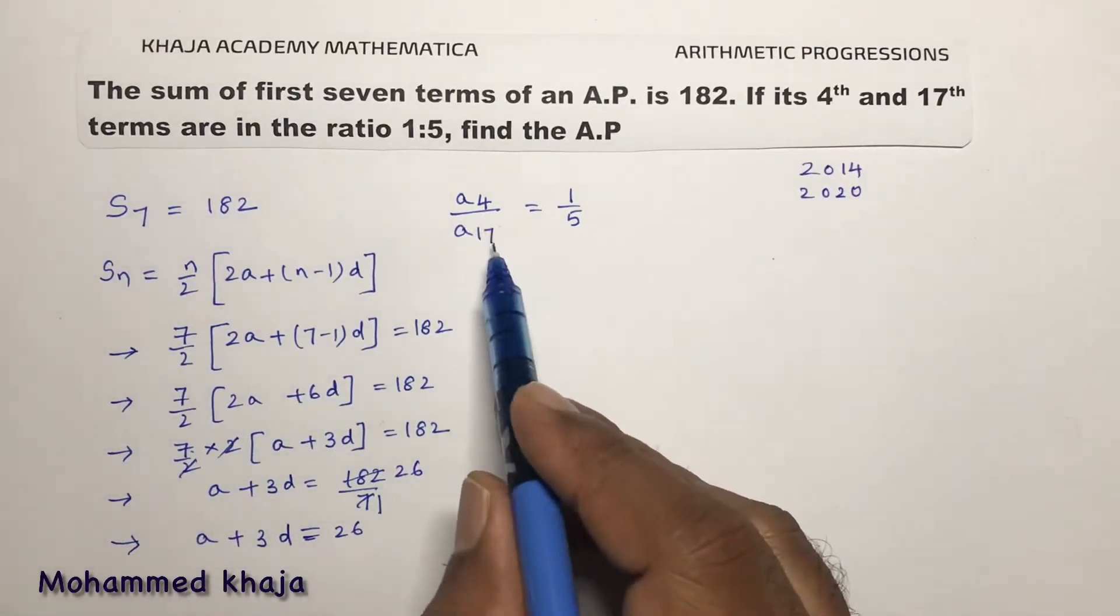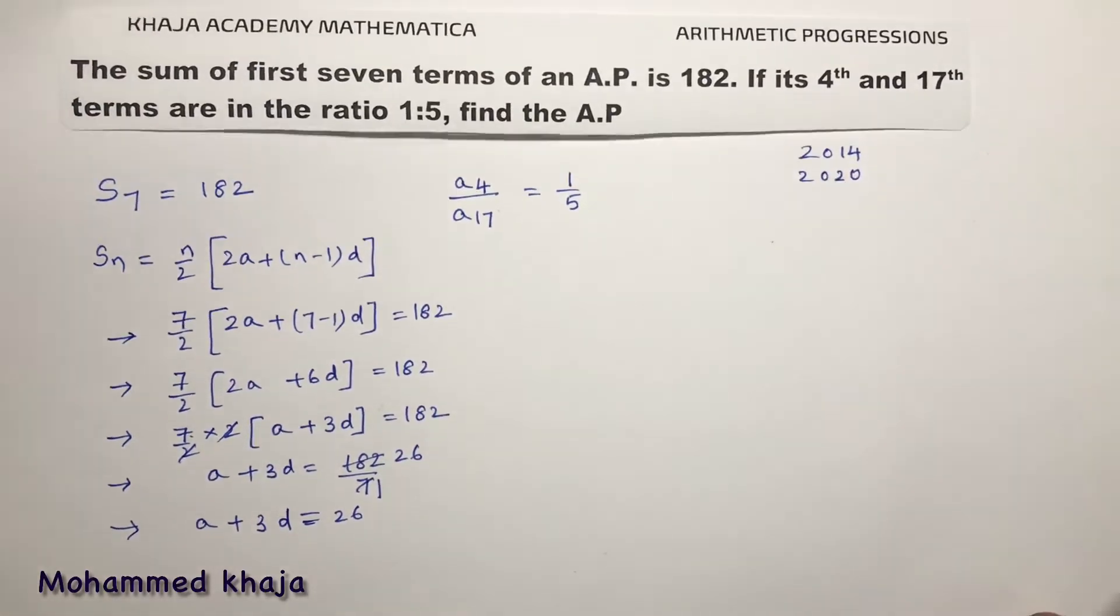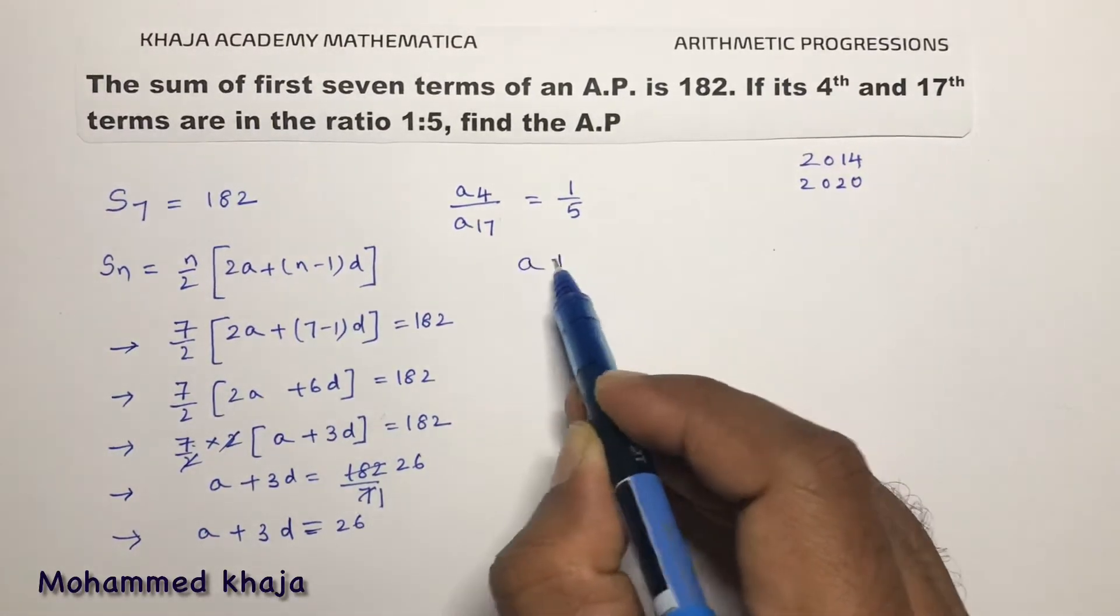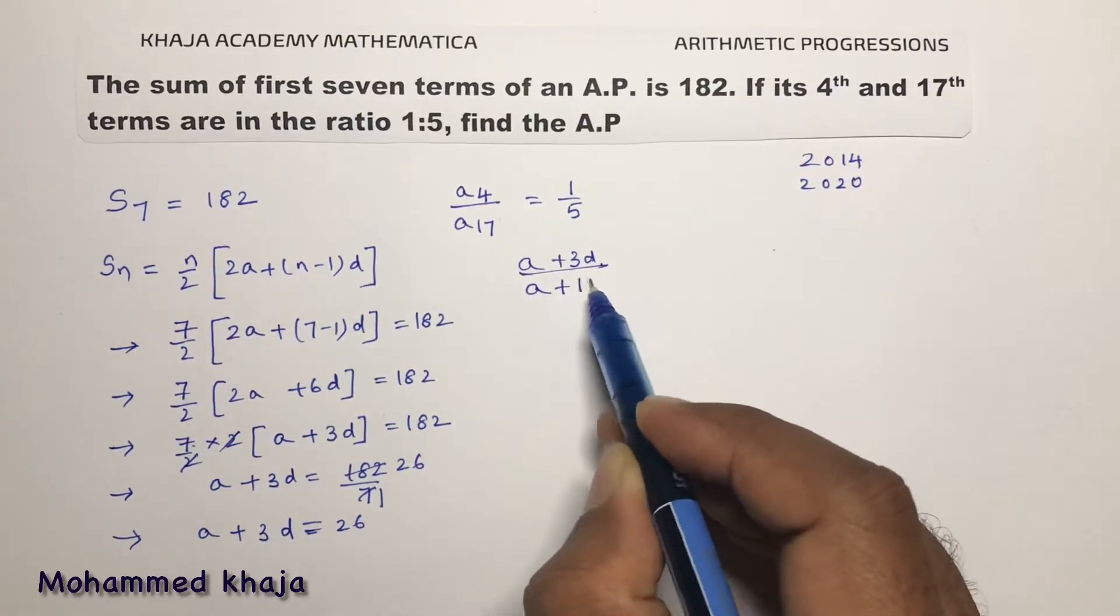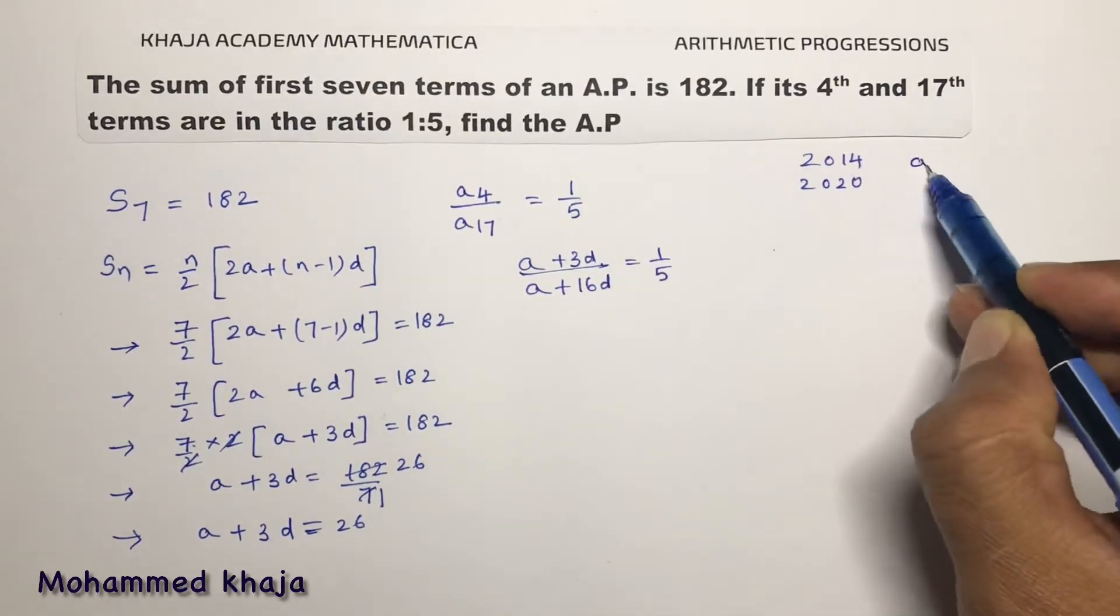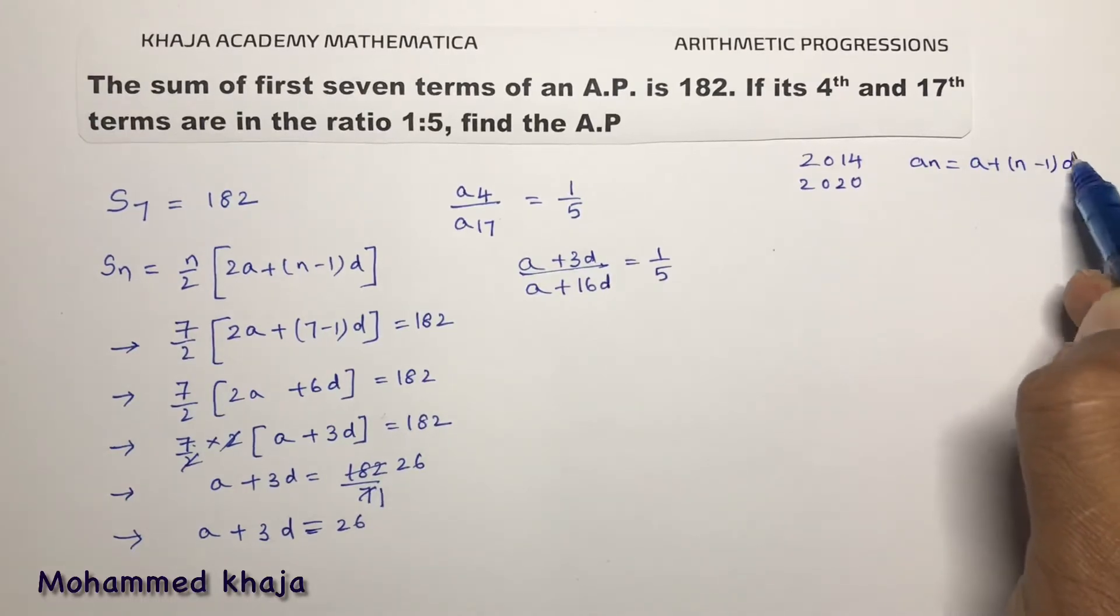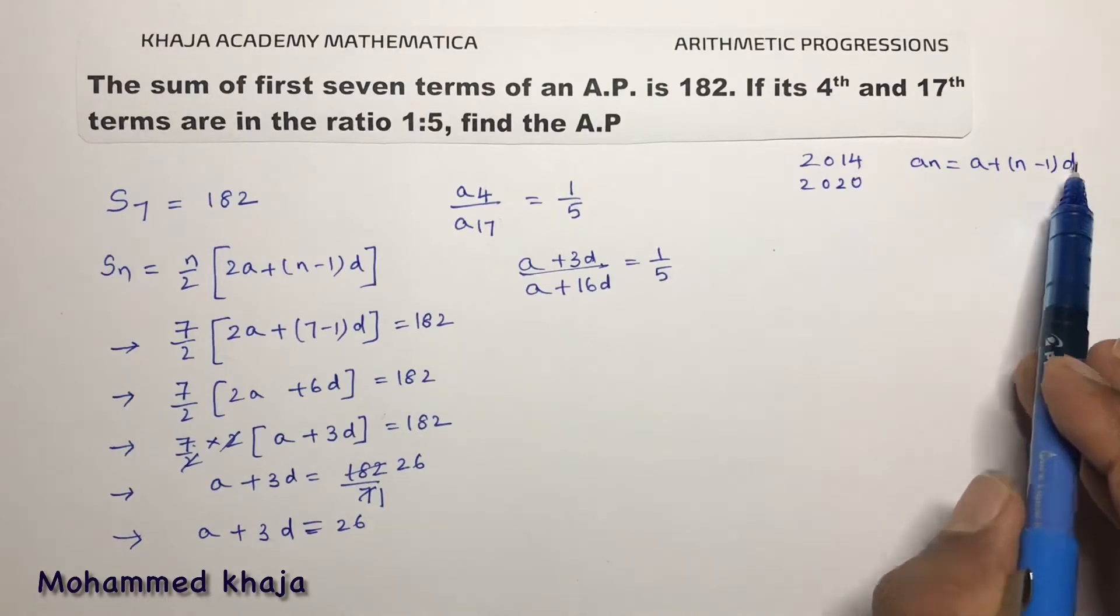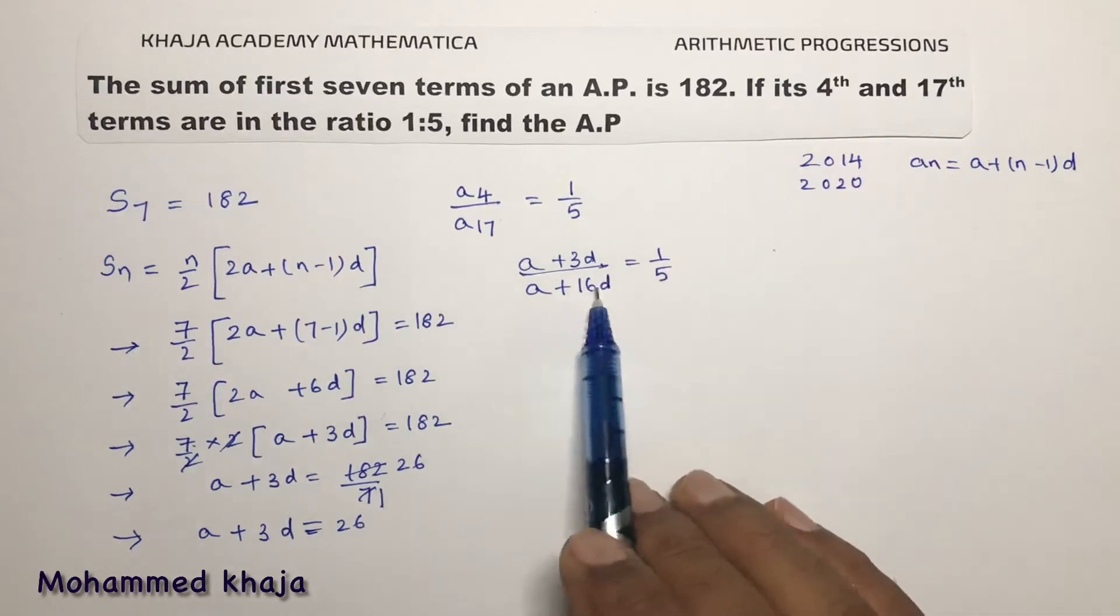Fourth term and 17th term are in the ratio 1 is to 5. So A4 is A plus 3D, A17 is A plus 16D. Nth term of an AP, I am using the formula A plus N minus 1 into D. So A4 will be A plus 4 minus 1 into D which is 3D. A17 is A plus 17 minus 1 into D which is A plus 16D.